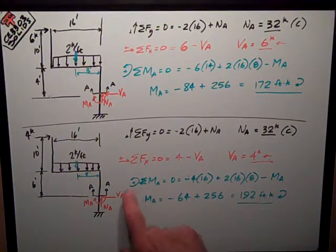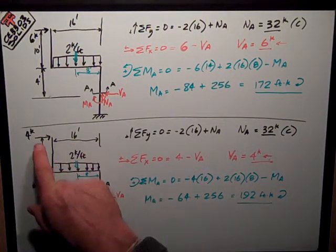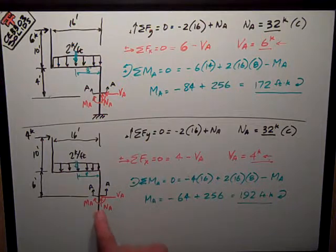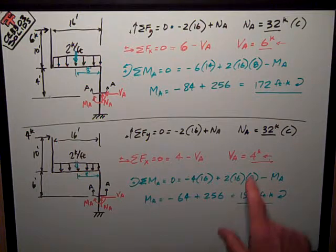Once again, finally summing moments about point A, counter-clockwise positive. I get negative four, because it's clockwise, times its moment arm of sixteen, plus two times sixteen times eight, exact same calculation as up here.